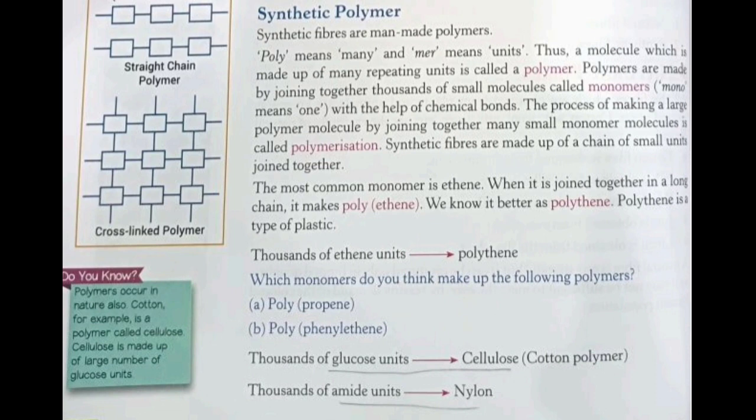As far as classification of fibers is concerned, fibers are of two types: natural and synthetic. Natural fibers include cotton, silk, jute, and wool. Synthetic fibers - which we'll study this year - include rayon, nylon, polyester, and acrylic, among many others. Synthetic fibers are obtained from petrochemicals like crude oil, through chemical processing of leftover products.